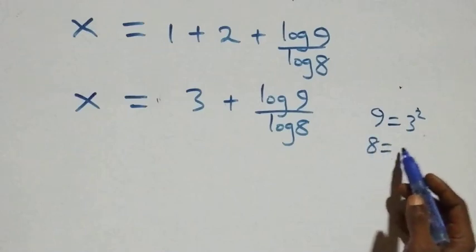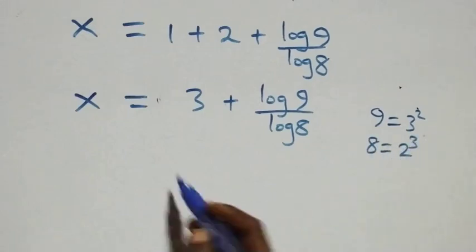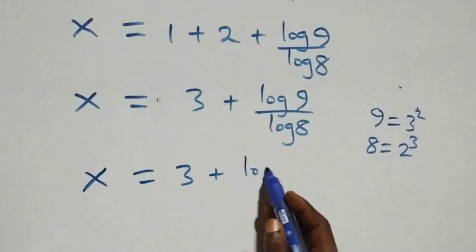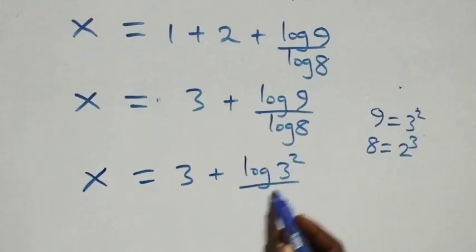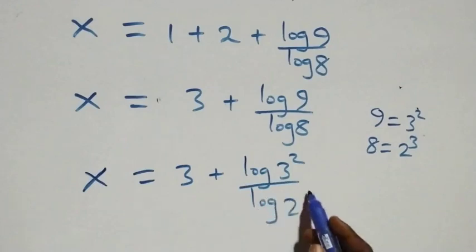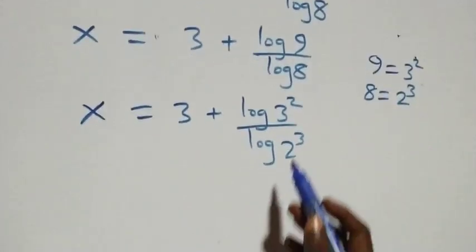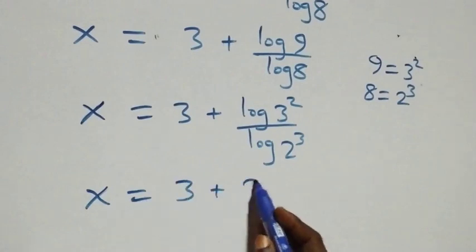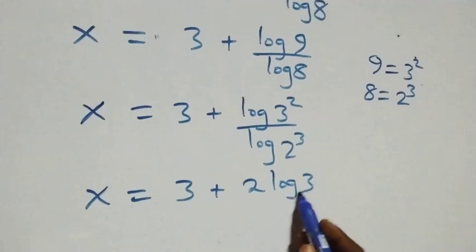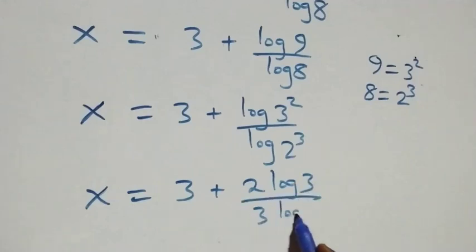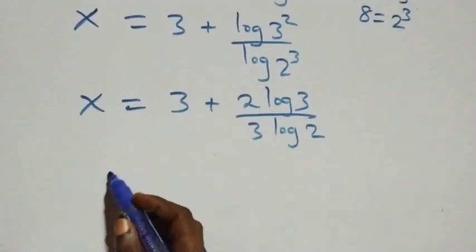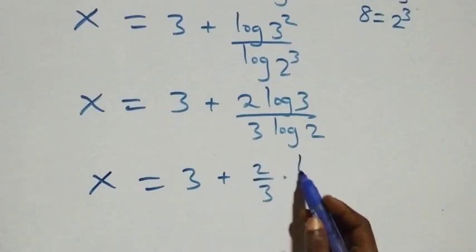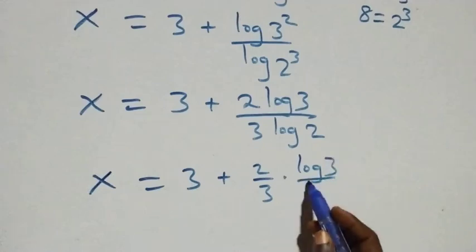We express 9 as 3 squared and 8 as 2 raised to power 3. So x equals 3 plus log(3 squared) over log(2 raised to power 3). Applying the power law, 2 and 3 come down: x equals 3 plus 2 log 3 over 3 log 2, which can also be written as x equals 3 plus 2 over 3 times log 3 over log 2.